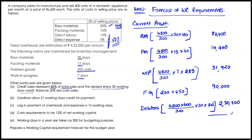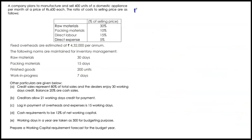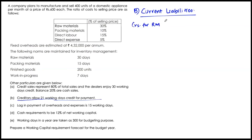Now we arrive at current liabilities. Creditors allow 21 working days credit for payment. First item: creditors for raw material. 4,800 units over 300 days, for 21 days, multiplied by raw material cost of Rs. 180 per unit gives: 4,800 ÷ 300 × 21 × 180 = Rs. 60,480.